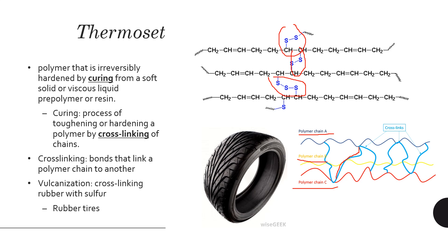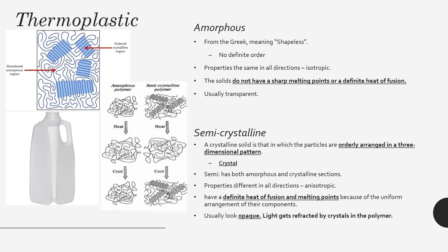Cross-linking creates small bonds that link polymer chains to each other, making the polymer harder. These are chemically bonded, so when you apply heat instead of melting they will just degrade with temperature. Now let's look at thermoplastics. Thermoplastics have two categories: amorphous and semicrystalline. These are the most common polymers — the ones we recycle and use every day.